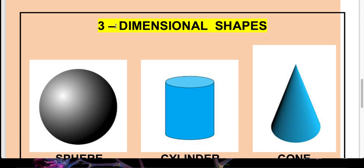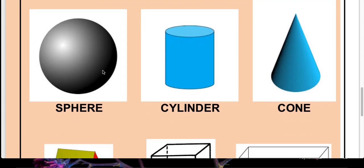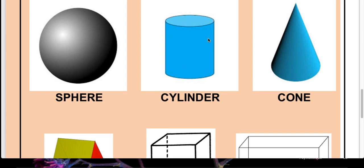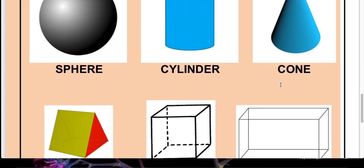Now we will discuss three-dimensional shapes. Three-dimensional shapes also include some common shapes. We can see sphere and cylinder. Cylinder is a combination of two 2D shapes — there is a circle on top, a circle on the base, and a rectangular face in between. So cylinder is a combination of circle and rectangle. Similarly, cone is a 3D shape that is a combination of a circle and a triangle. So we can develop three-dimensional shapes using two-dimensional shapes.